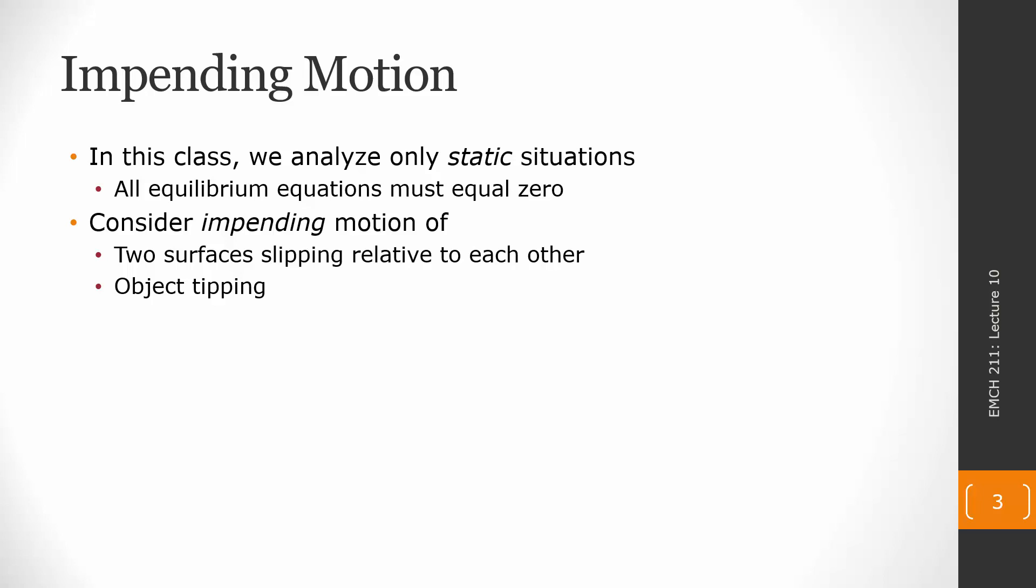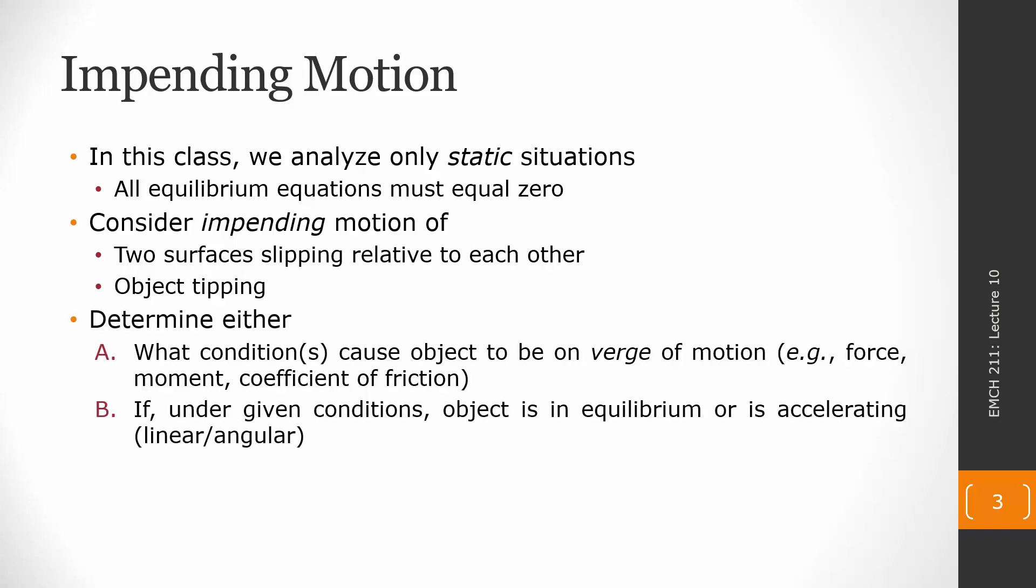So there's two kinds of impending motion problems that we are going to be looking at. The first class under A, what conditions would cause an object to just be about to move, just be about to slip relative to a surface, or just about to tip? So the thought is, if we put any more force than this, or any more of a moment than this, or lowered the coefficient of friction any lower than this amount, the system would actively be moving. So that's what on the verge of motion is.